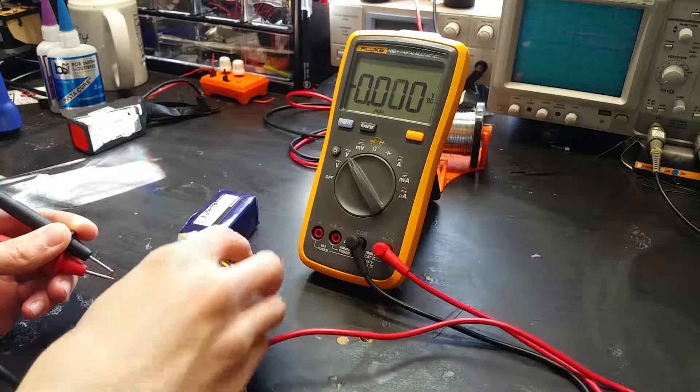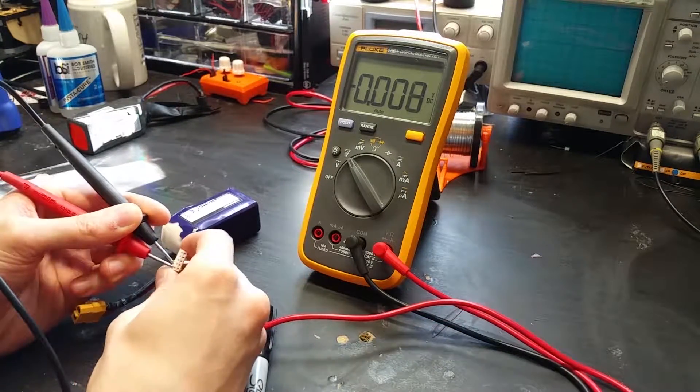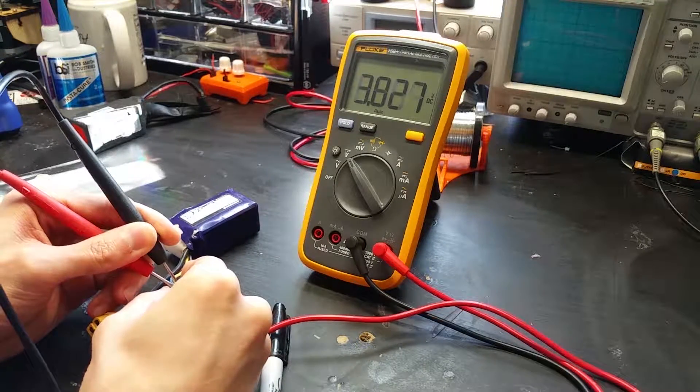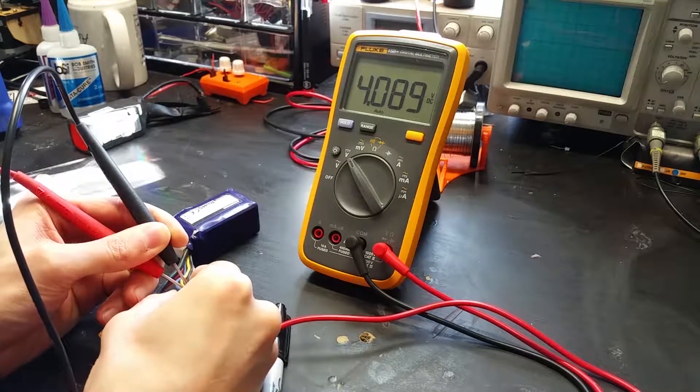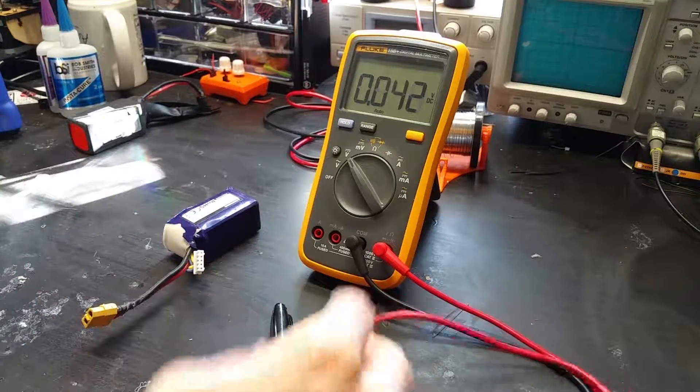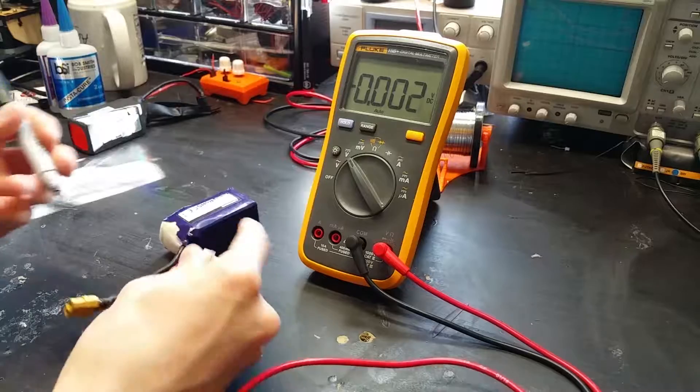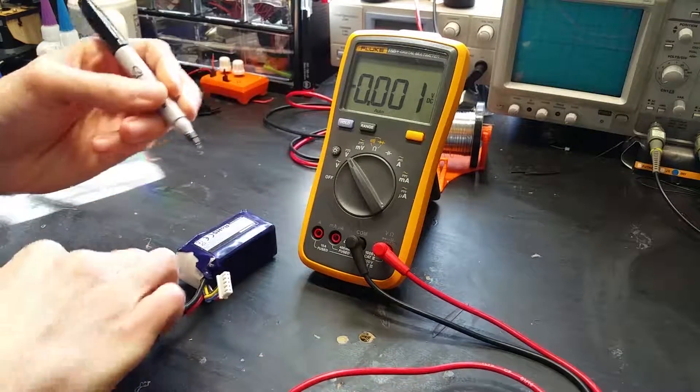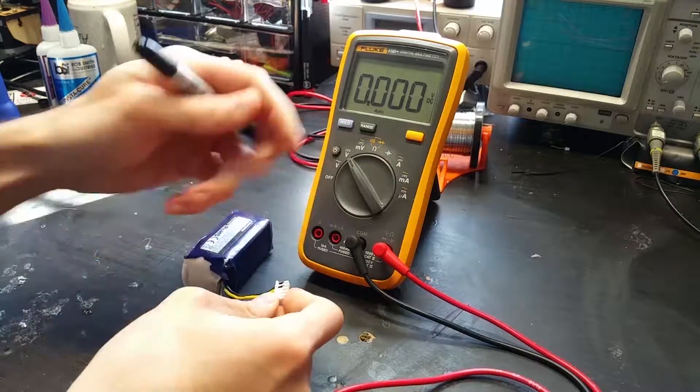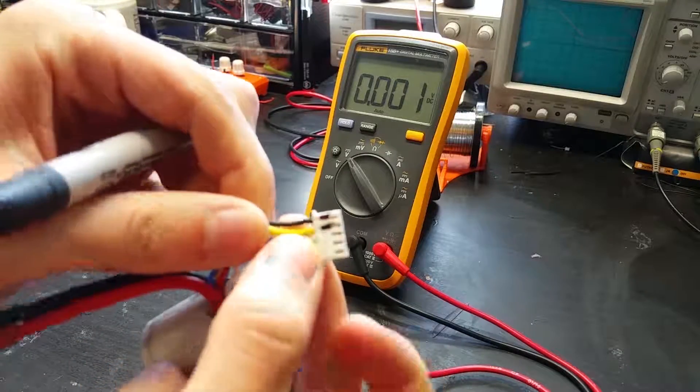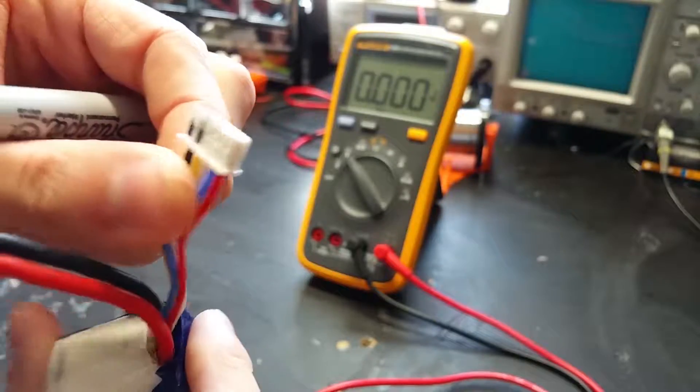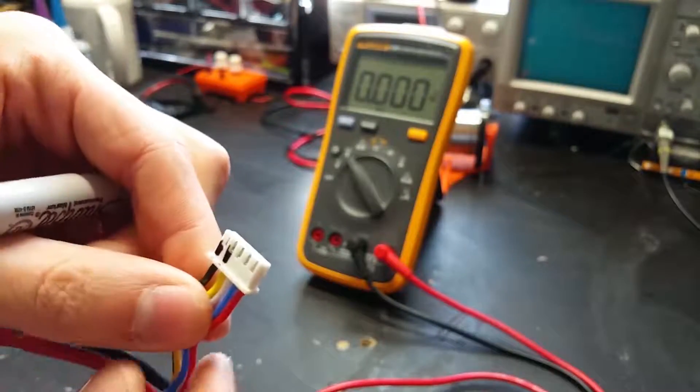First thing you'll want to do when taking apart a battery is identify which of the cells are bad. So you can do that just by checking the voltage across the different terminals here on the balance connector. So that one's fine. That cell's fine. That cell's fine. So it must be this last cell over here. And yep, that one's definitely dead. So I'm just going to take a Sharpie here and I'll mark which two terminals on the plug that is. So that on here happens to be this black wire and this yellow wire. So now when I'm taking this apart, I know which cell's bad, so which one I can get rid of.